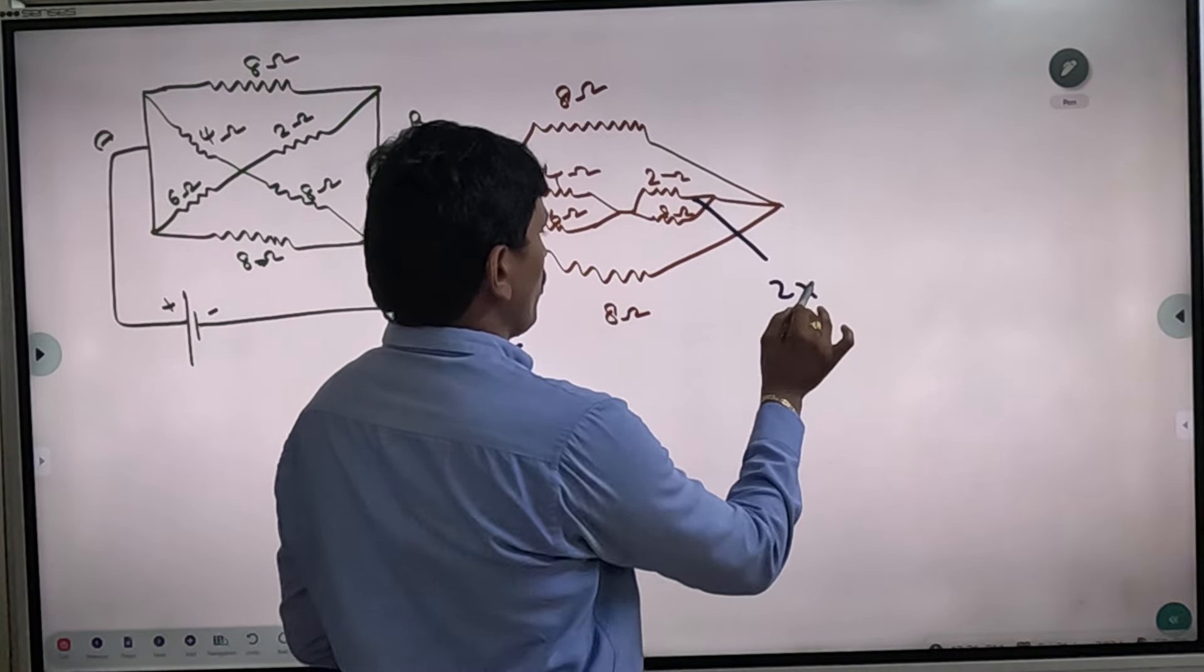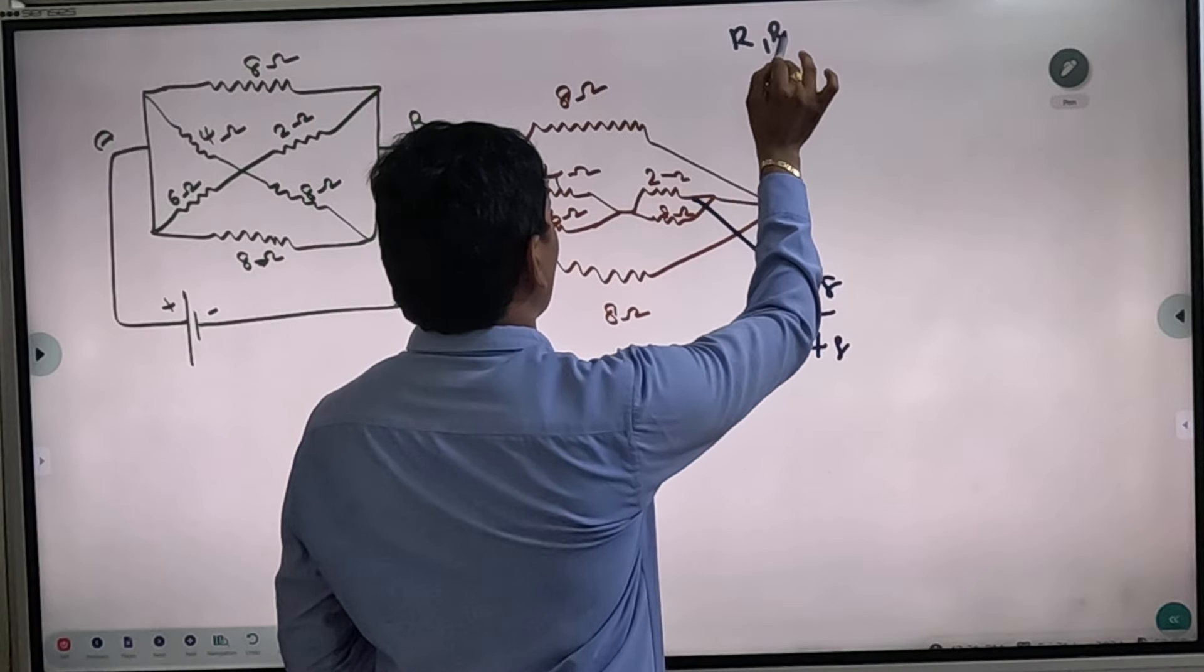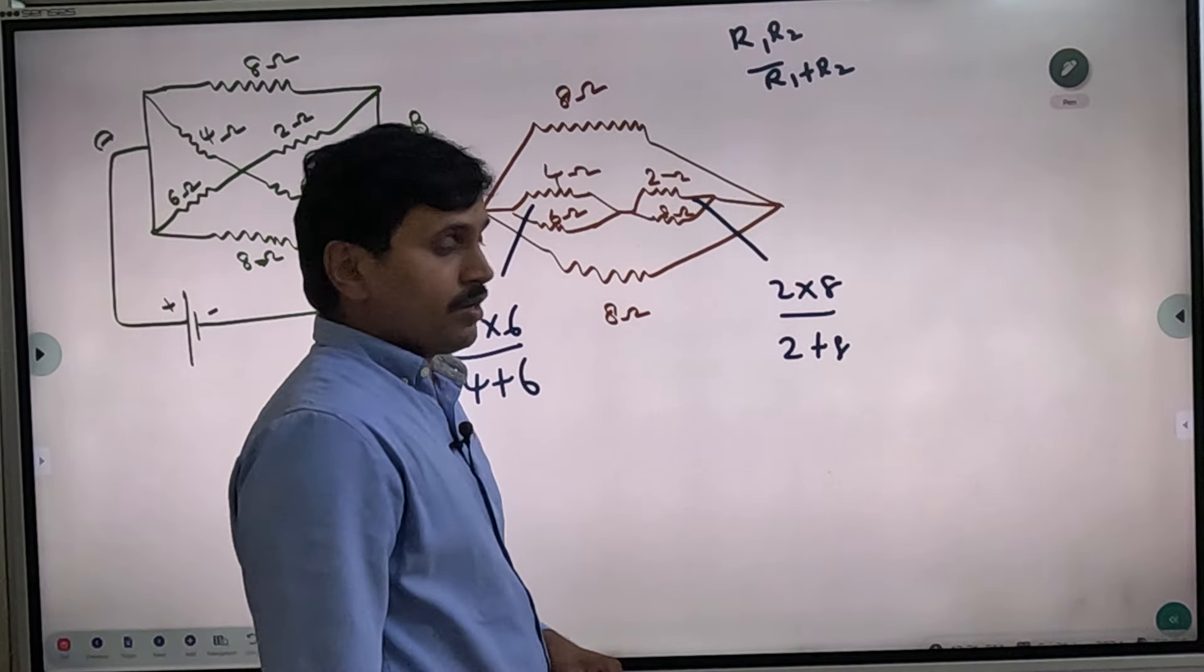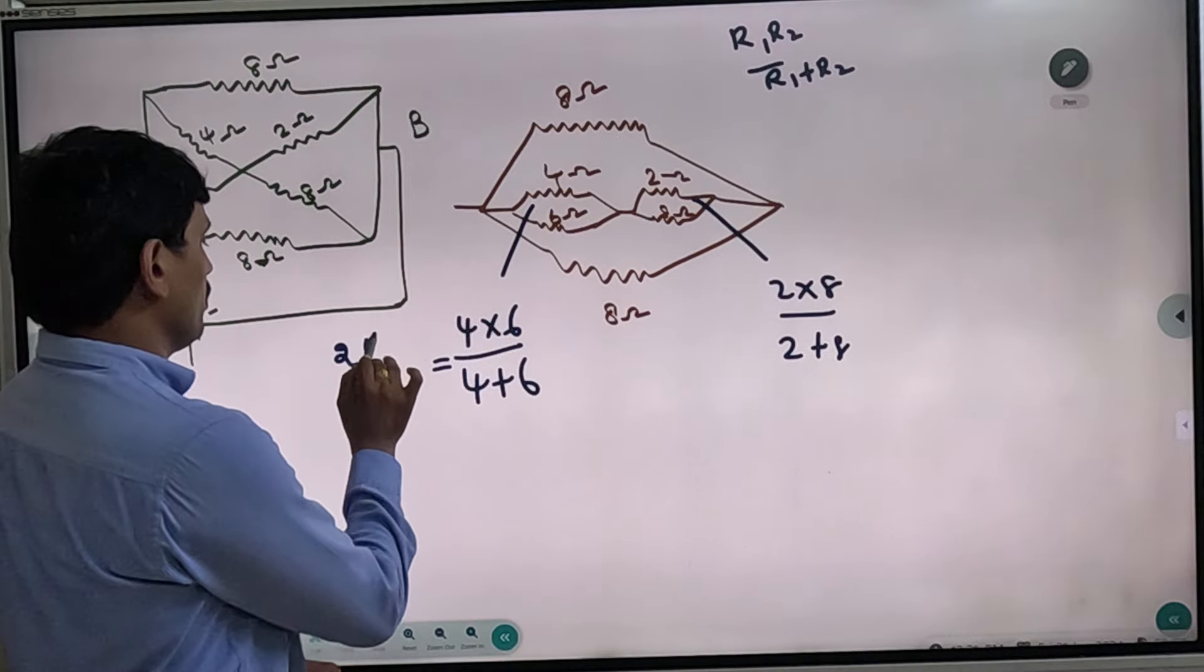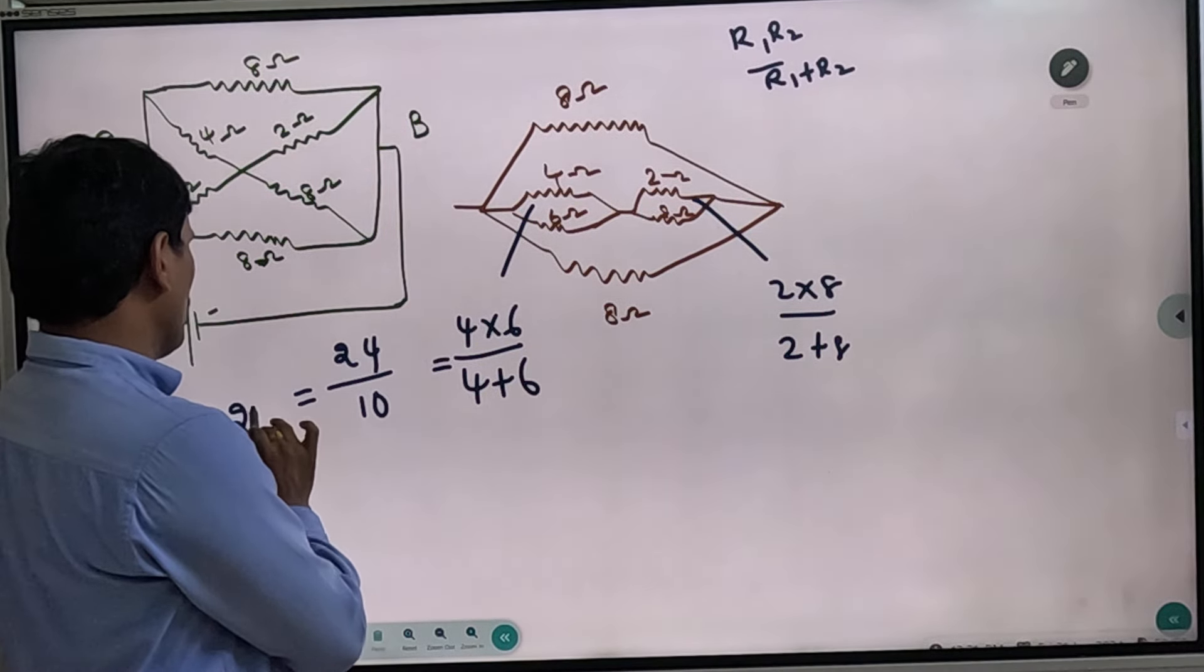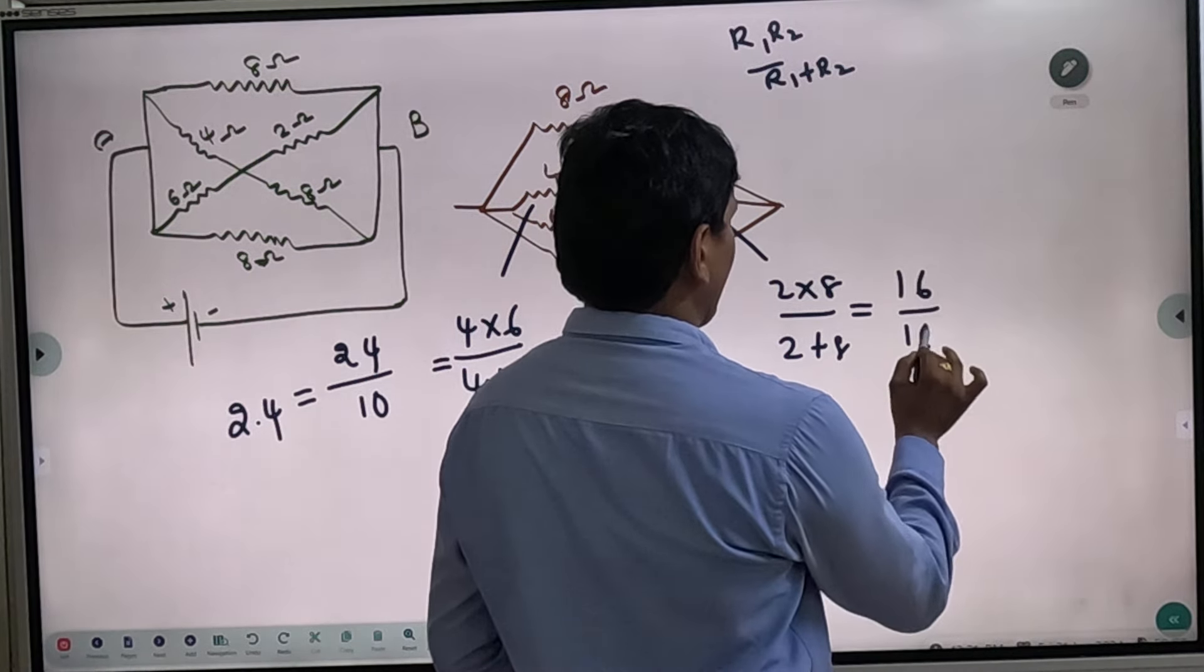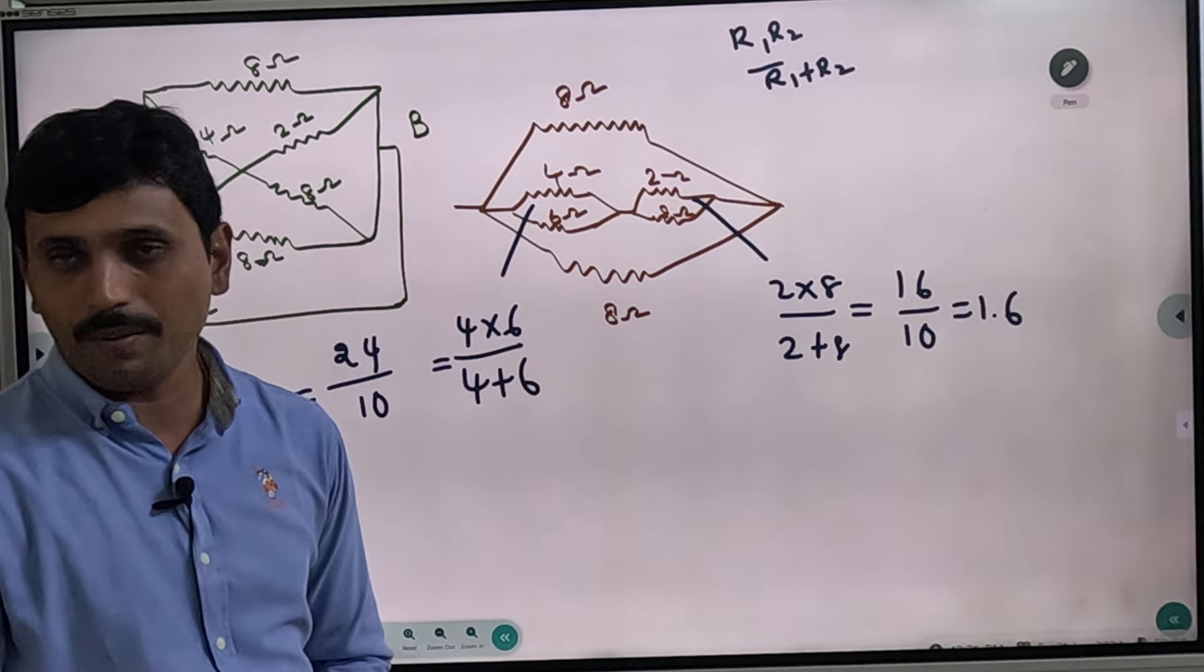2 into 6 by 2 plus 6, so R1 into R2 by R1 plus R2. The result is R4 plus 10, so R2 is 2.4. Now it's 16 by 10, resultant value 1.6.